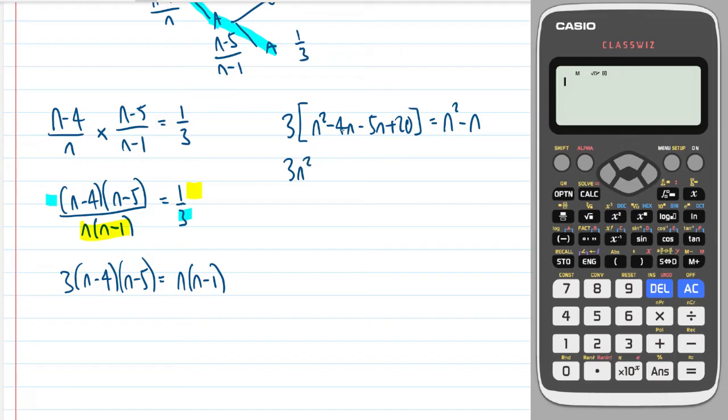Multiplying through by three and collecting these up, negative four minus nine times by three is minus 27 plus 60 is equal to n squared minus n.